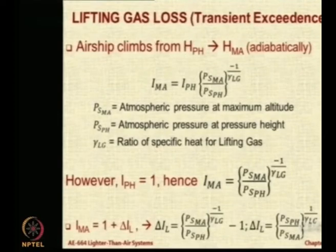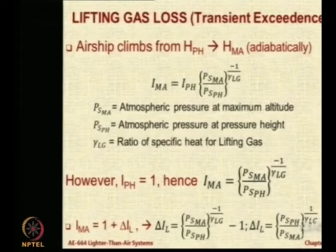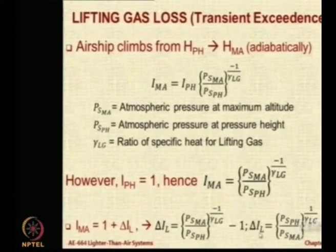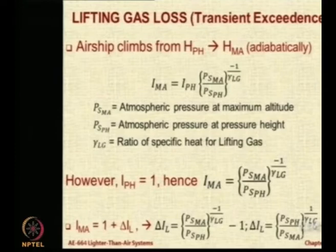Since I_MA equals 1 plus delta_IL, the delta_IL can be back-calculated as (P_s_pH / P_s_MA)^(1/γ_lg) minus 1. Here the minus sign has been addressed by inverting the ratio — P_s_MA is now in the denominator and P_s_pH is in the numerator. So the final expression is that the additional inflation fraction equals the ratio of pressures to the power 1 by gamma_lg minus 1, that is the ratio at the pressure altitude over the maximum altitude.